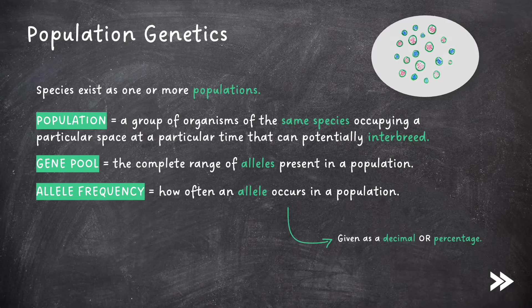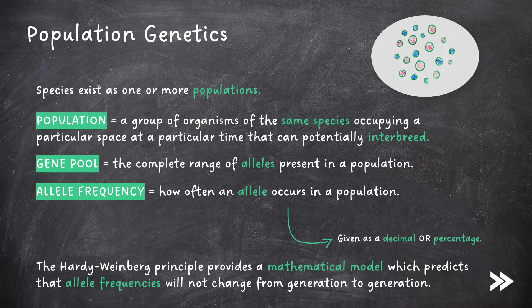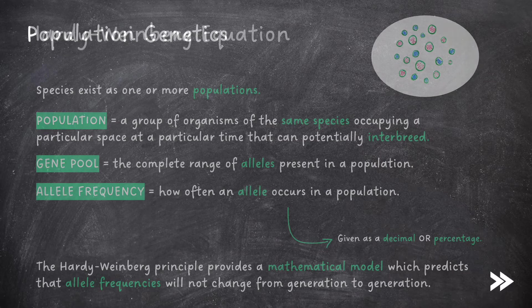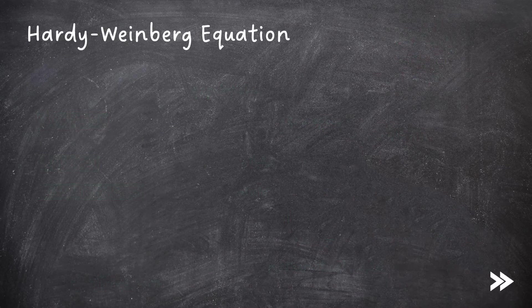The Hardy-Weinberg Principle provides a mathematical model which predicts that allele frequencies will not change from generation to generation. For the Hardy-Weinberg Principle, we need to learn two equations.